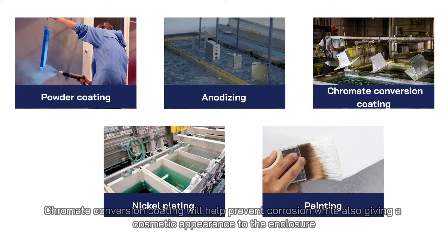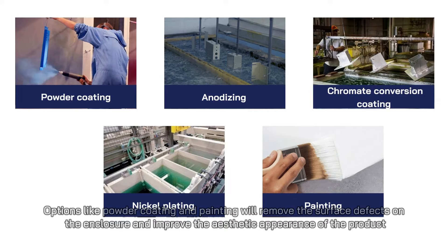Chromate conversion coating will help prevent corrosion while also giving a cosmetic appearance to the enclosure. Options like powder coating and painting will remove surface defects on the enclosure and improve the aesthetic appearance of the product.